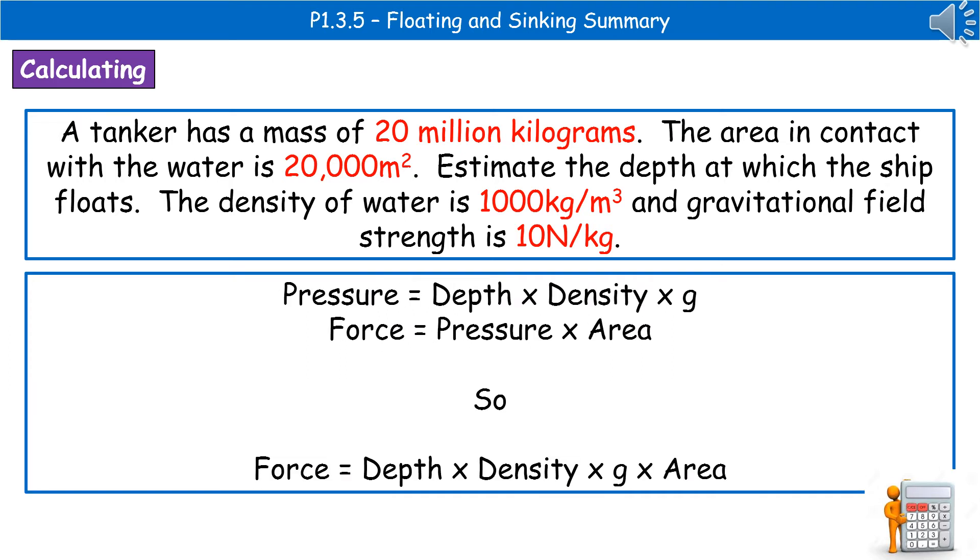The next thing to do is have a look and see what we've got and what we need to work out. Now, in this case, we don't have everything to just use one of our formulas. We need to use two. We've got pressure is depth times density times gravitational field strength, and force is pressure times area.